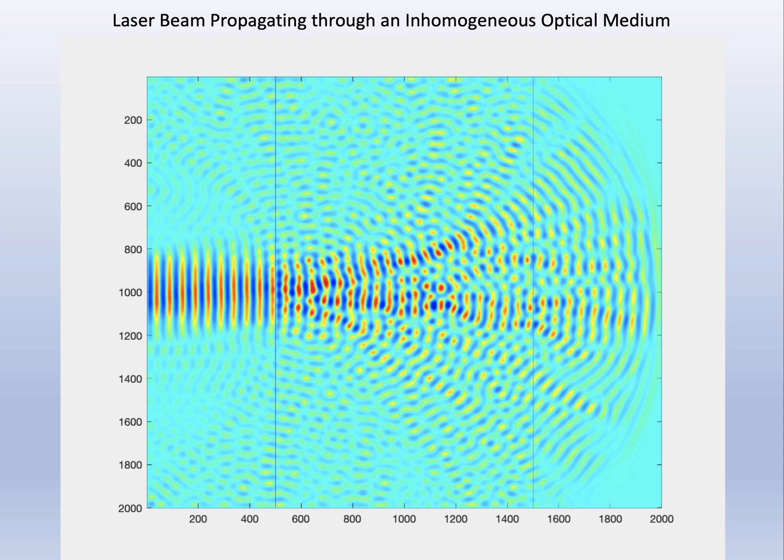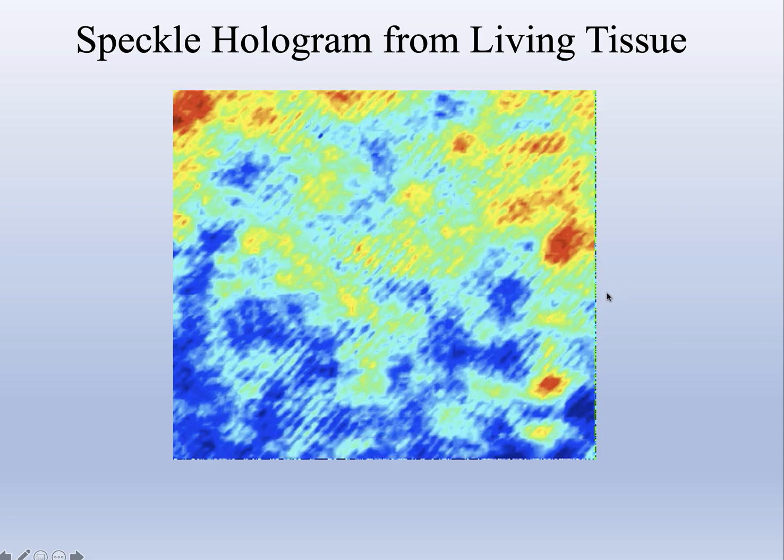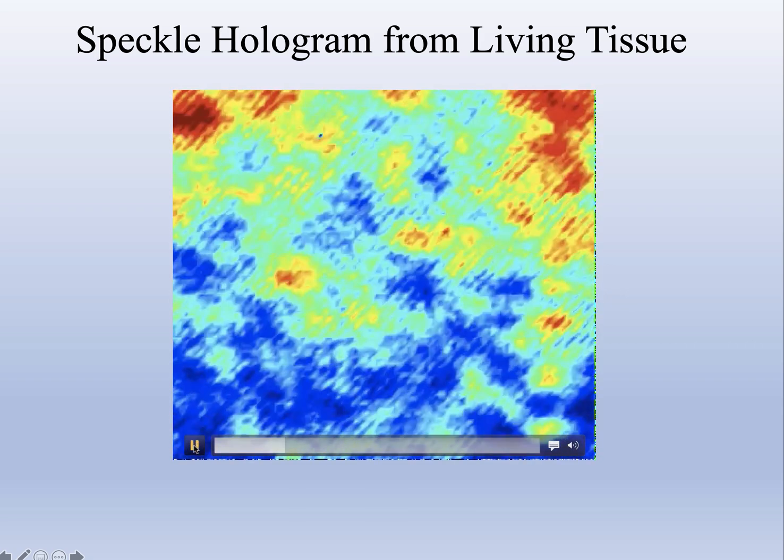There are all the fluctuations in the atmosphere, and it aberrates the beam. This is why you have to have adaptive optics or put telescopes in space. So one thing that we are doing with speckle is shining laser beams on living tissue.